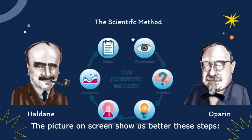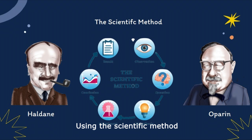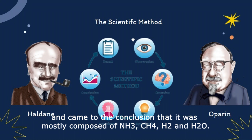In the beginning of the 20th century, the time of the great peak of discoveries in science, an old question came back to the scientist: how did life emerge? Using the scientific method, Alexander Oparin and John B. S. Haldane committed to answer it. During their studies, they sought to know how the Earth's atmosphere was made, and came to the conclusion that it was mostly composed of NH3, CH4, H2, and H2O.